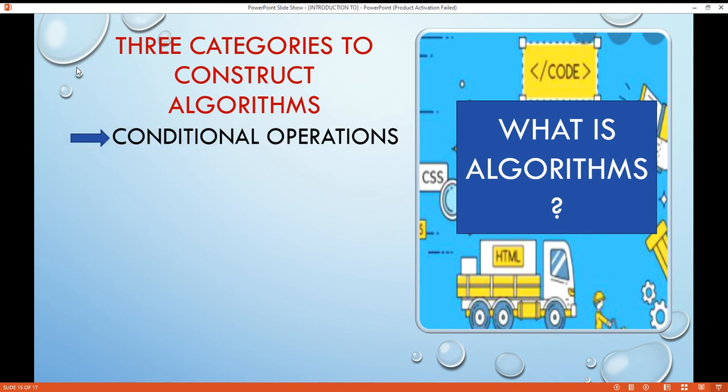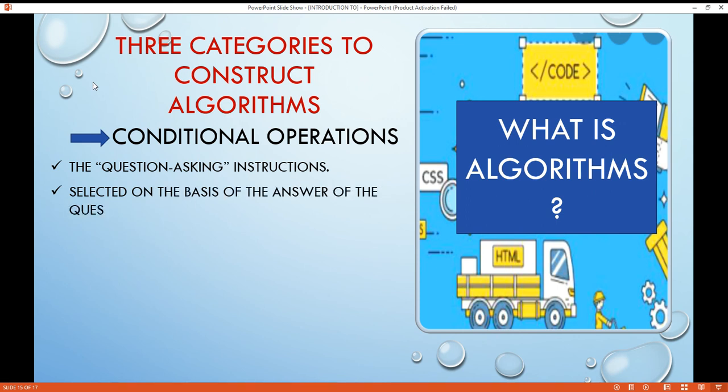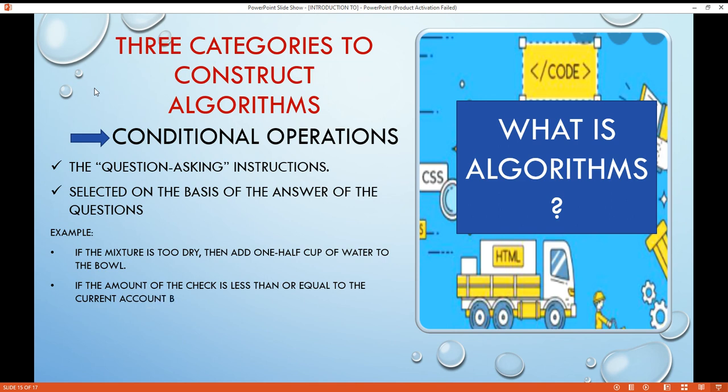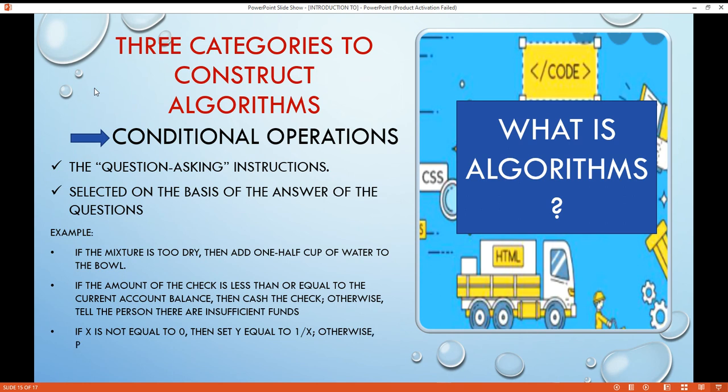For the conditional operations, these are the question-asking instructions of an algorithm. They ask a question and the next operation is selected on the basis of the answer to that question. Examples: If the mixture is too dry, then add one half cup of water to the bowl. If the amount of the check is less than or equal to the current account balance, then cash the check. Otherwise, tell the person there are insufficient funds. If X is not equal to 0, then set Y equal to 1 over X. Otherwise, print an error message that says you cannot perform division by 0.